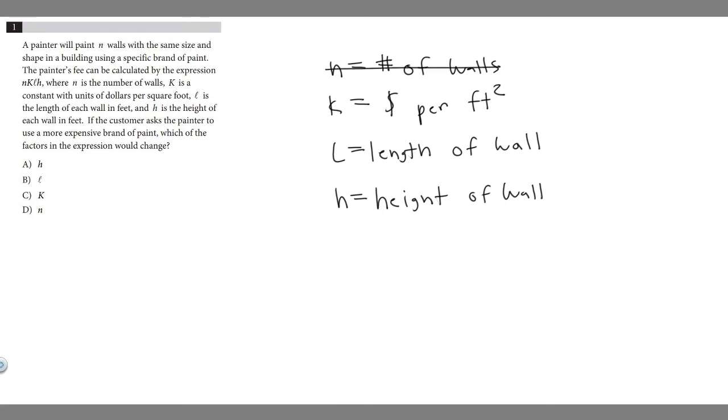But what about k? k is dollars per square foot. So if we go from four to eight dollars, it's going to make each square foot more expensive, right? Because we're changing the dollar amount per square foot. So that one would make sense.